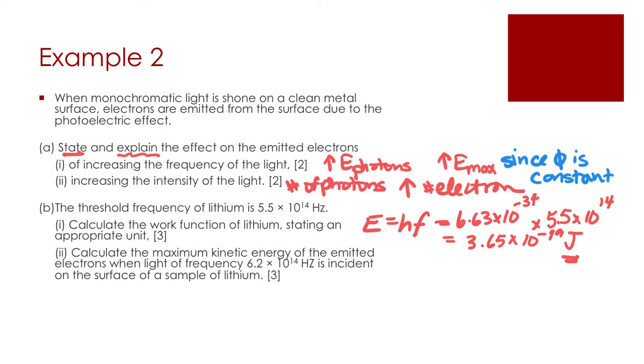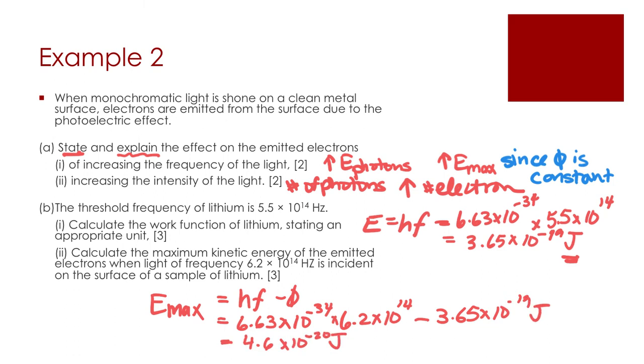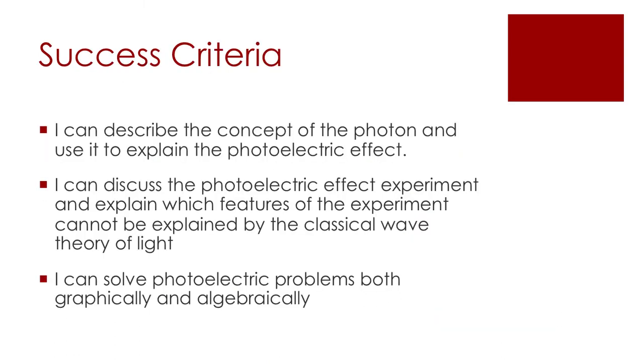And now we need to find out how much energy those electrons are going to get. Now, we can use our equation from the data booklet. And in this case, we're going to use Planck's constant again. 6.63 times 10 to the minus 34 times the incident light that we have, 6.2 times 10 to the 14, and minus the work function we just calculated above. And we're going to get our answer of 4.6 times 10 to the minus 20 joules. So, take another moment and read the success criteria. I hope this video has helped you be able to say, yes, I can, to all those statements.